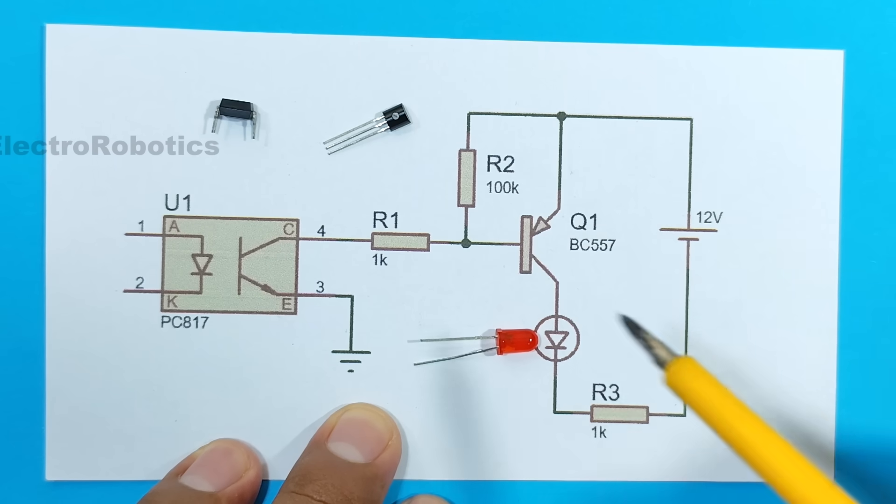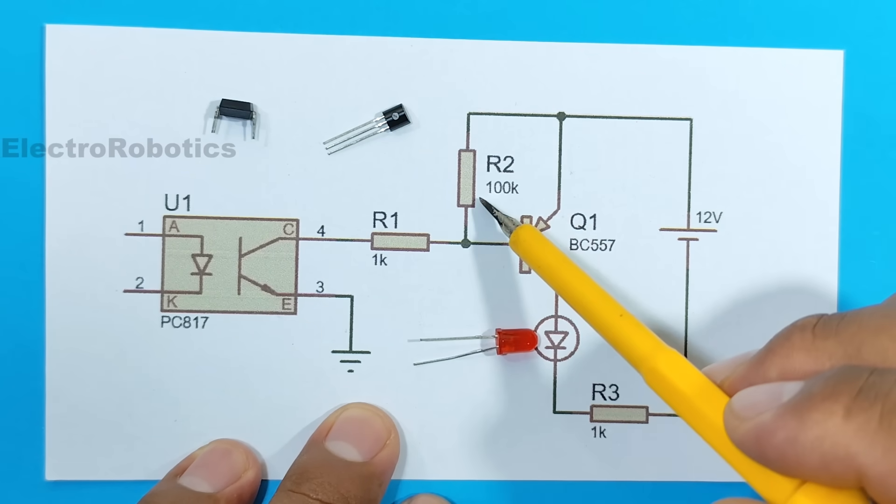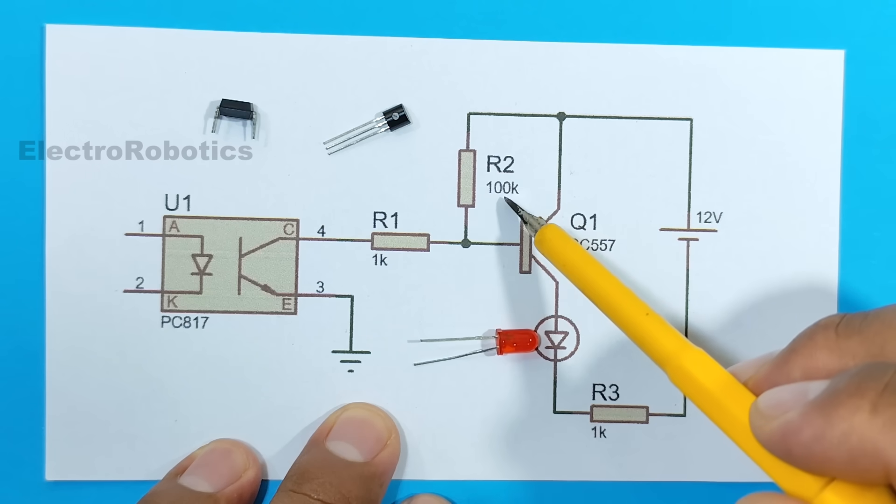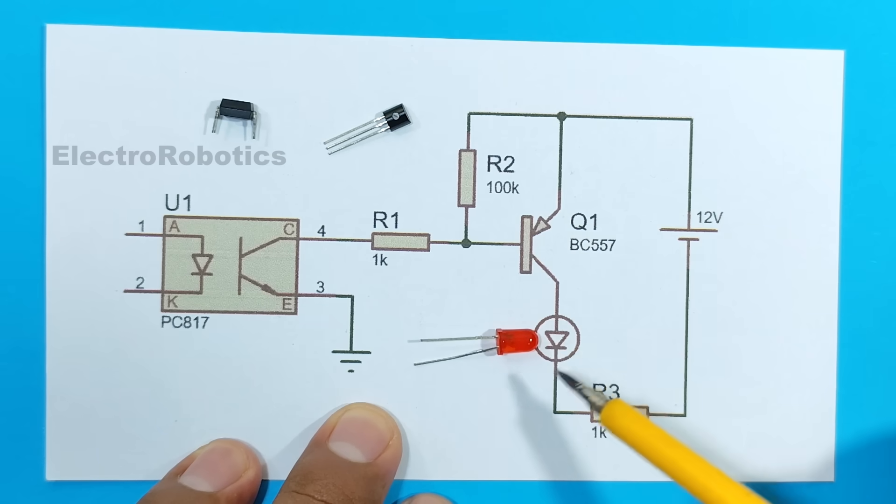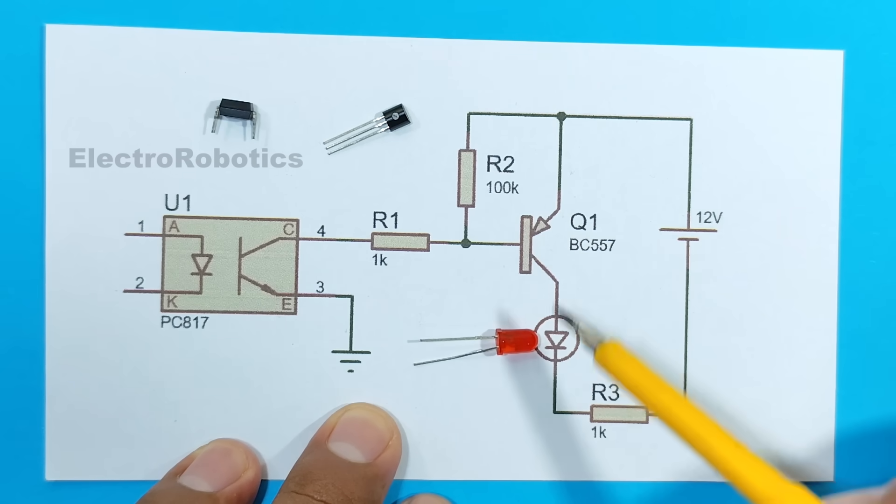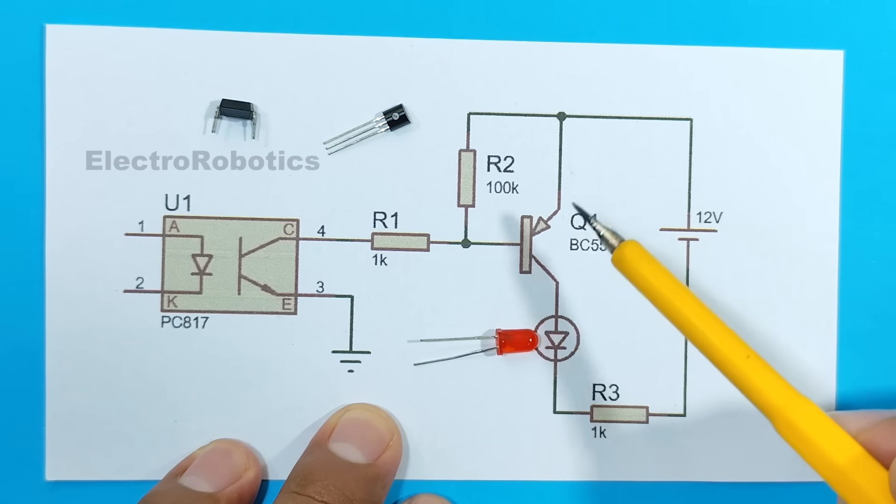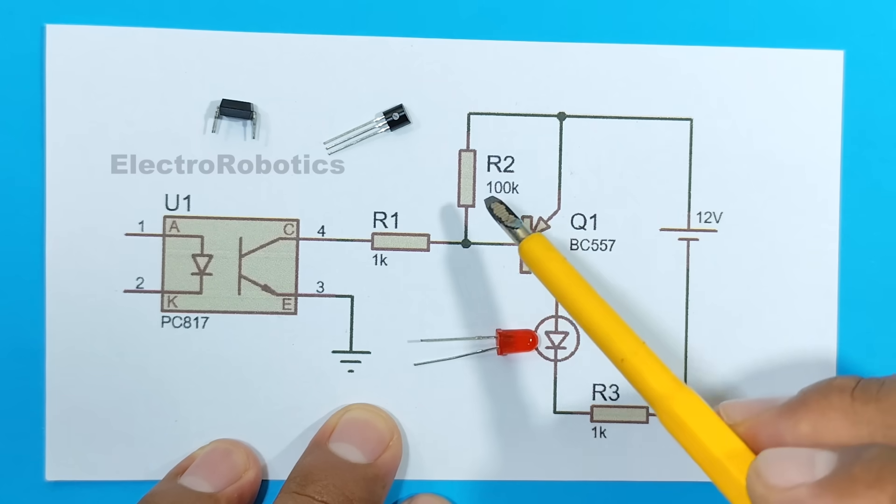Now, what other components do we have? Well, we have a fairly large resistor, one of 100 kiloohms. And what is it for? This resistor is used to keep the LED off when there is no signal. And how does it do this? Well, in the following way.